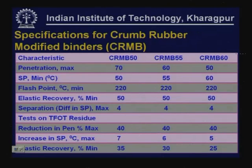We also have specifications for crumb rubber modified binders (CRMB). These are obtained by blending crumb rubber — from old used tires from which steel fibers are removed and the material is shredded into fine powder — with bitumen under appropriate conditions. CRMB grades are CRMB 50, 55, and 60, where the grade designation refers to the minimum softening point: 50, 55, and 60°C respectively. Penetration specifications are 70, 60, and 50 for the three grades. Further specifications are available in IRC Special Publication 53.